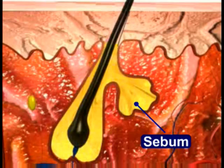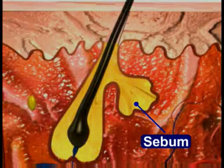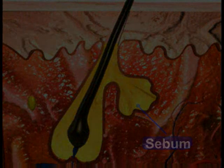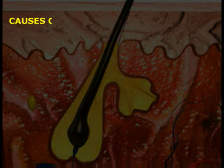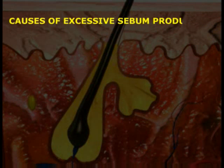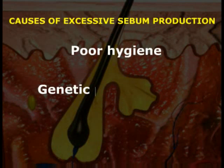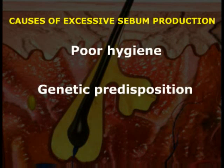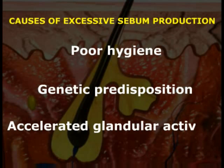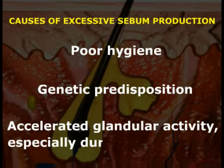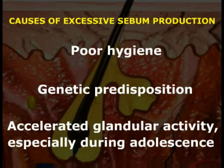Overproduction of sebum is related to the disease called acne, or commonly pimples. Sebum may collect excessively as a result of poor hygiene, genetic predisposition, or accelerated glandular activity, especially during adolescence.